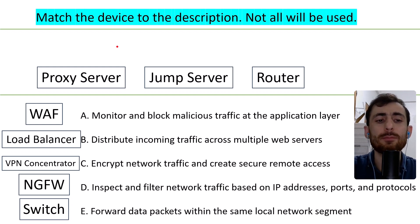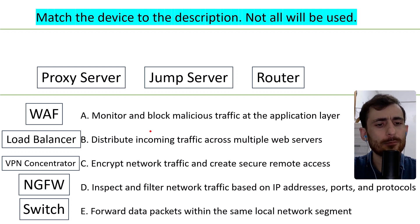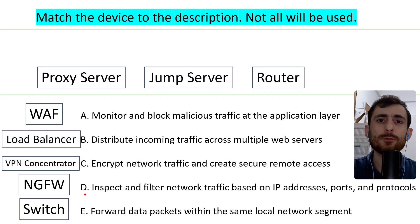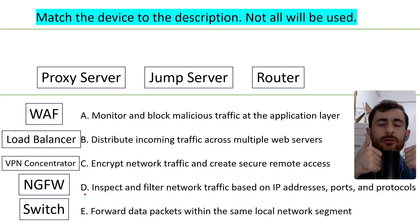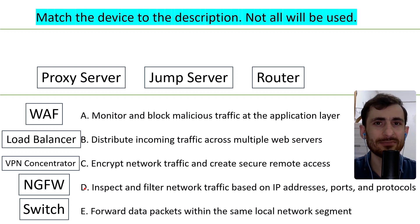The rest of the devices — proxy server, jump server, and router — are left unused in this question, so go study those. We'll have more performance-based questions in future videos, including configuring a firewall and writing rules in our next example. Make sure to like the video, subscribe, and I'll catch you on the next one. I wish you success in your exam!